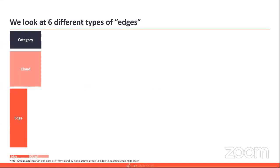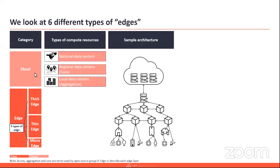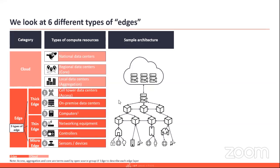If you look at the spectrum, there's cloud and there's edge. We actually classify three types of edges: we say there's a thick edge, thin edge, and the micro edge. On the cloud side, there's national data centers, regional data centers, and local data centers. In a sample architecture, you can see computation in the cloud that gets broken down all the way to whatever devices you're connecting on the IoT side. There is everything that happens around the cell tower data centers, on-premise data centers, computers, networking equipment — and now we go further down to the controllers, the sensors, and the devices.